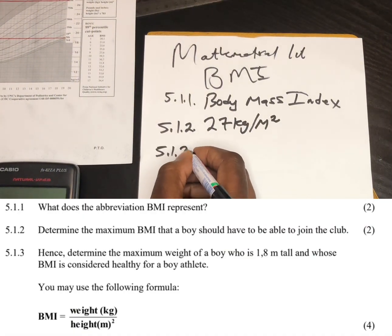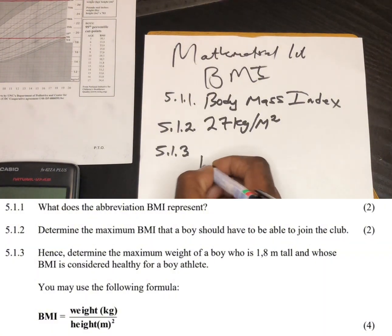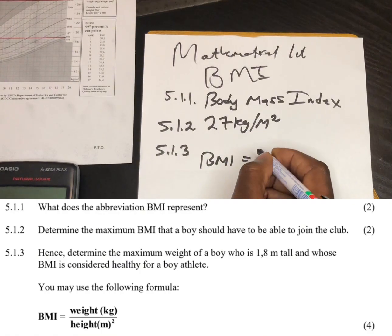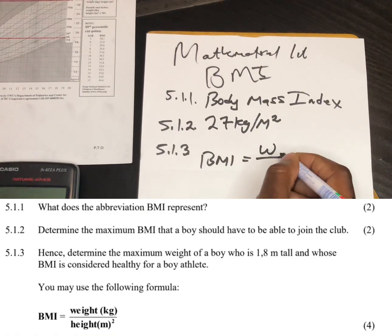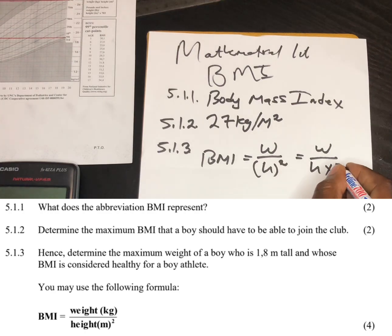5.1.3. The next question says Hence. When they say Hence, it means that we should use the previous answer. Don't forget the previous answer is the BMI. So determine the maximum weight of a boy who is 1.8 meters tall and whose BMI is considered healthy for a boy athlete. You may use BMI equals weight divided by height squared, which is the same as weight divided by height multiplied by height.